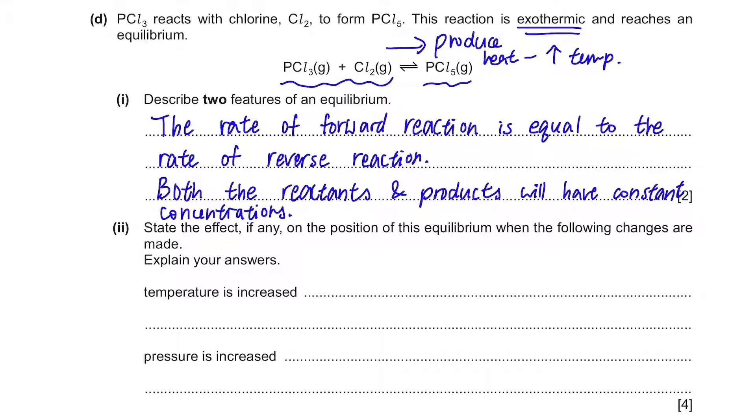So when the temperature is increased, in order to maintain this equilibrium, this reaction will try to decrease the temperature. And since the forward reaction increases the temperature, this equilibrium will shift to the left-hand side. As the forward increases the temperature, the backward will naturally decrease the temperature. So when the temperature is increased, the position of the equilibrium will shift to the left-hand side, as the forward reaction is exothermic.